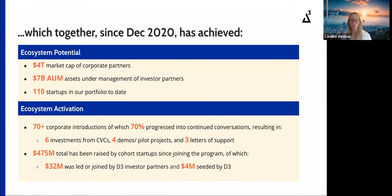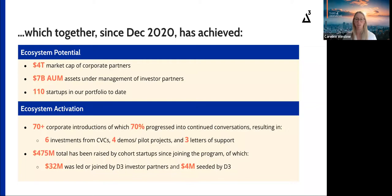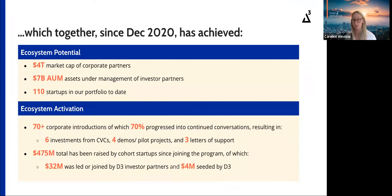Since December 2020, our ecosystem has achieved quite a lot. There have been over 70-plus introductions made between our corporate partners and startups of just our inaugural cohort, 70% of which progressed into continued conversations. As Elaine noted, this has resulted in a variety of piloting opportunities and commercial engagements. Additionally, $475 million has been raised by our cohort startups since they joined the program, of which $32 million was led or co-invested by a Third Derivative investor partner, and $4 million seeded by D3 specifically.